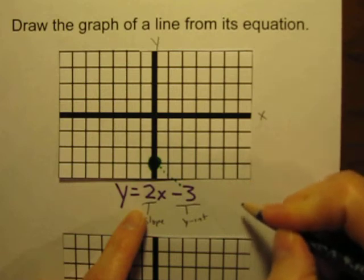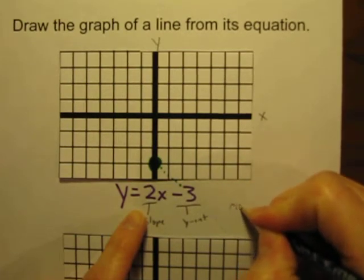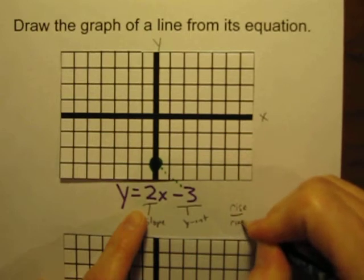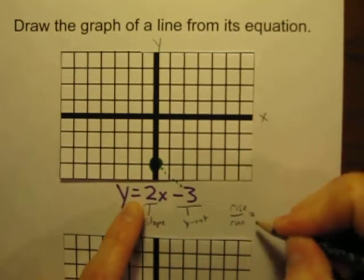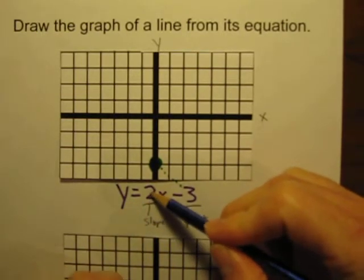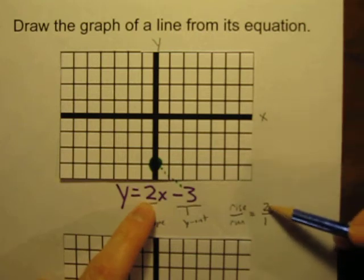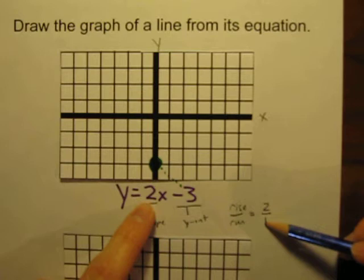One thing I like to do is I like to turn that into a fraction. And so if our slope is rise over run, our slope is going to be 2 over 1. So I like to turn the number 2 into a fraction by putting it over 1. So 2 over 1. So the rise is 2, the run is 1.